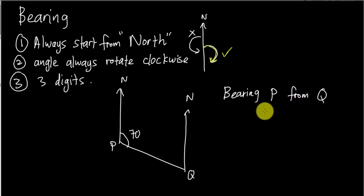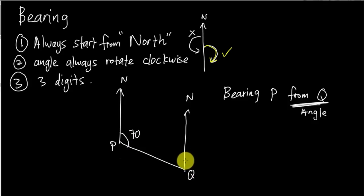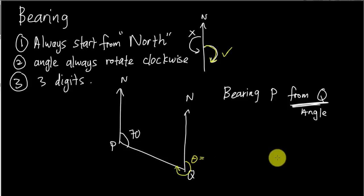For bearing P from Q, the angle is measured at Q. So you need to find the angle from the north of Q, rotating clockwise until you touch the line connecting P and Q. That angle — from the north of Q rotating clockwise to line PQ — is the one we want to find.